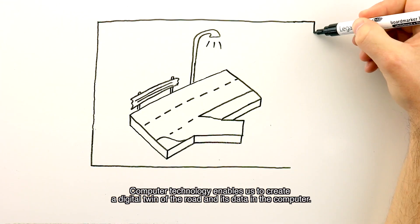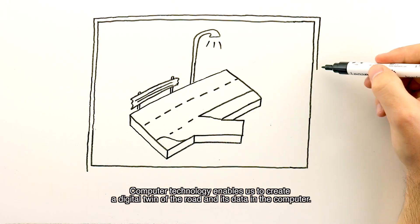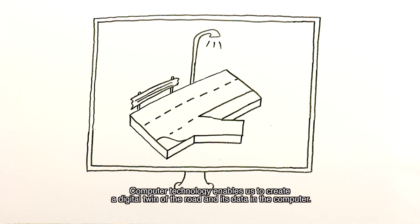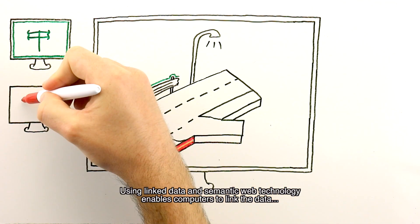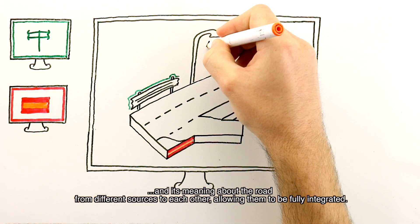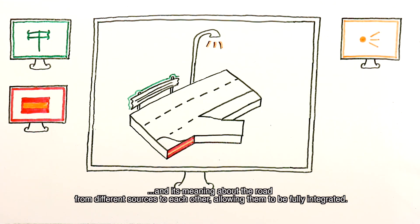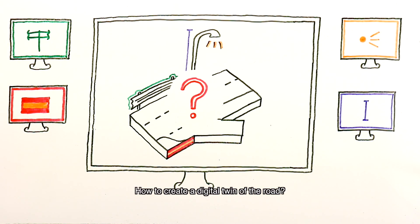Computer technology enables us to create a digital twin of the road and its data in the computer. Using linked data and semantic web technology enables computers to link the data and its meaning about the road from different sources to each other, allowing them to be fully integrated.